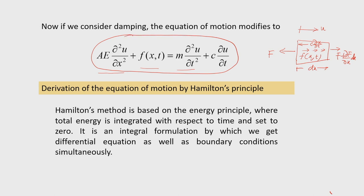In many cases we neglect damping, and if the externally applied force is also 0, then the equation reduces to: AE·∂²u/∂x² = m·∂²u/∂t². This equation has the same nature as the transverse vibration of a string, so the solution technique will be almost similar, except the parameters for axial vibration are different.